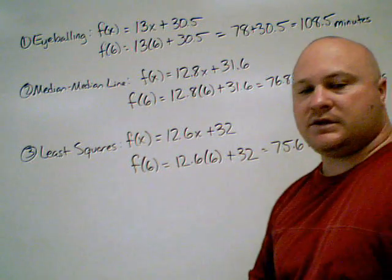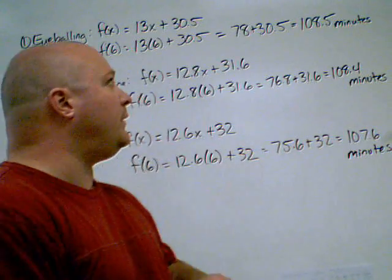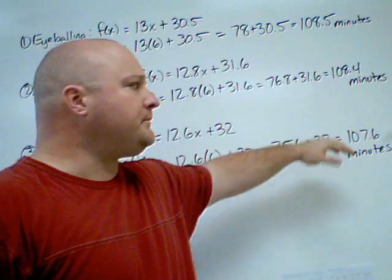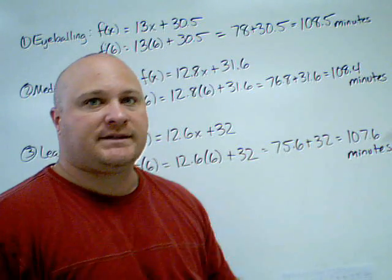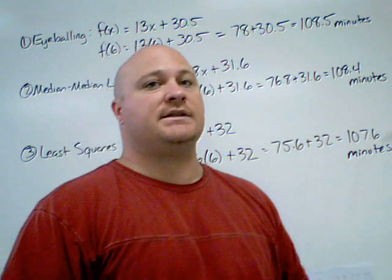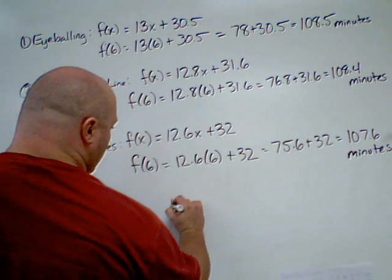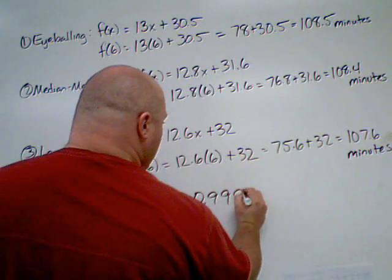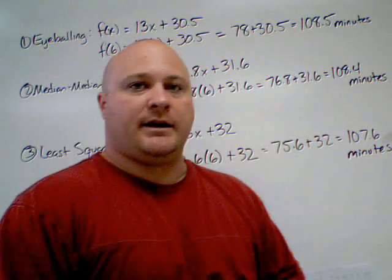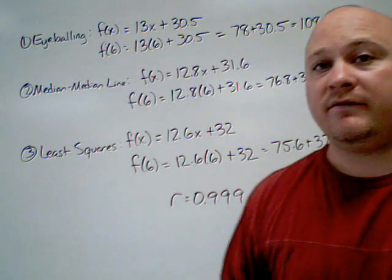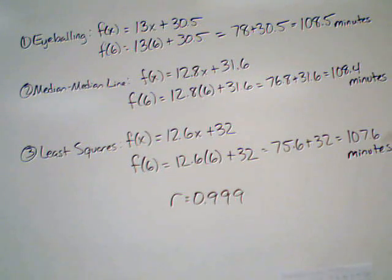So as you can see, my results are pretty close. I go from 108.5 using the eyeballing method, 108.4 using median-median line, and then 107.6 using the least squares method. All three are within one minute of each other. Now the reason for that is, again, R, our correlation coefficient, which was 0.999. That tells me that those data are very, very close to the lines that we're going to find. And if that's the case, then all three of my equations should end up being very, very close. And they are.